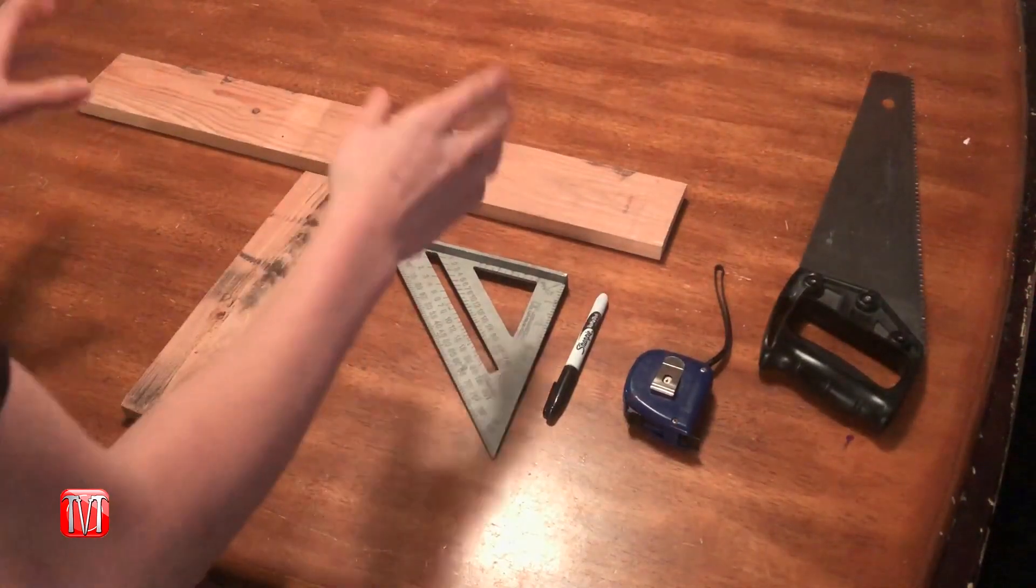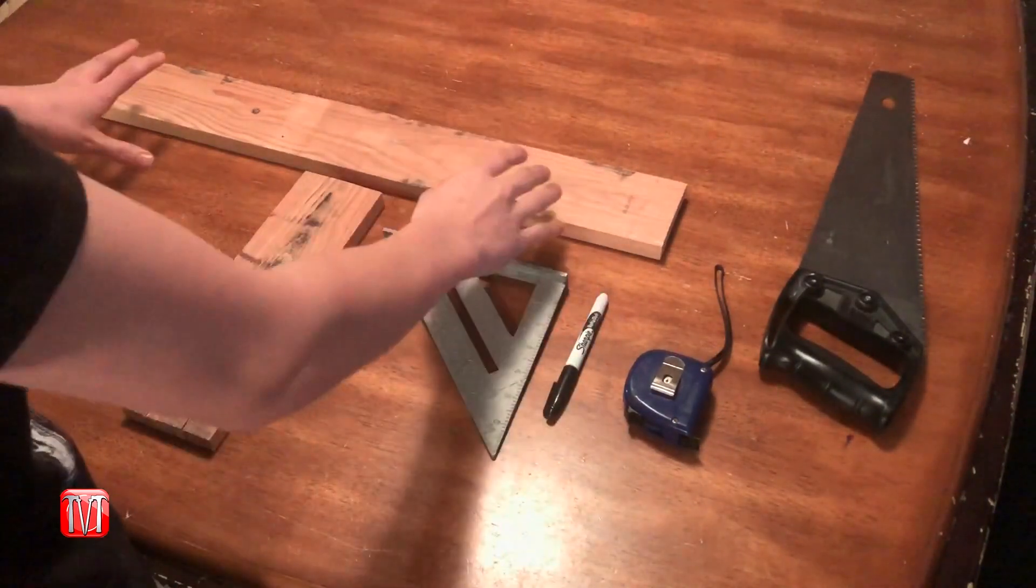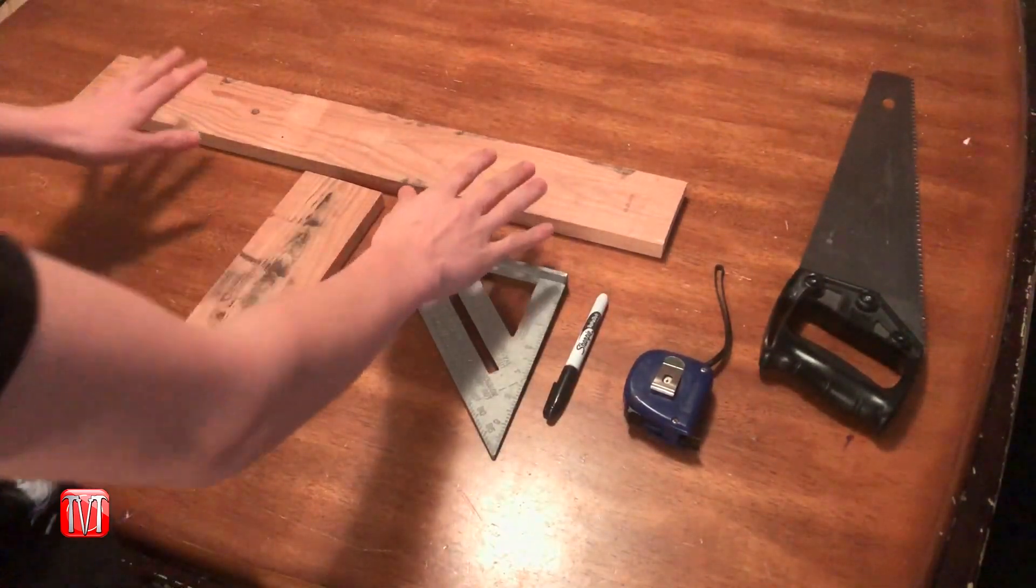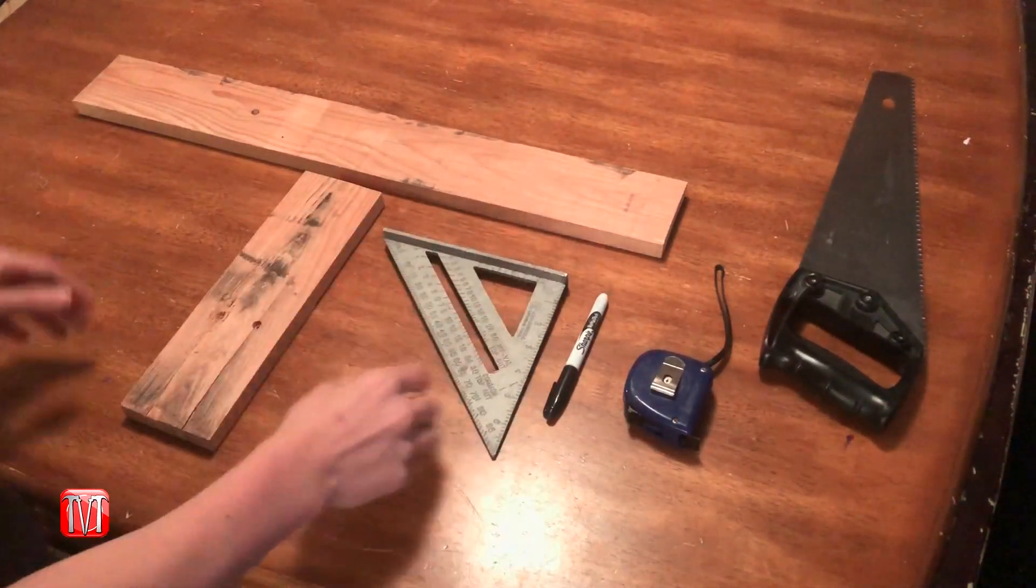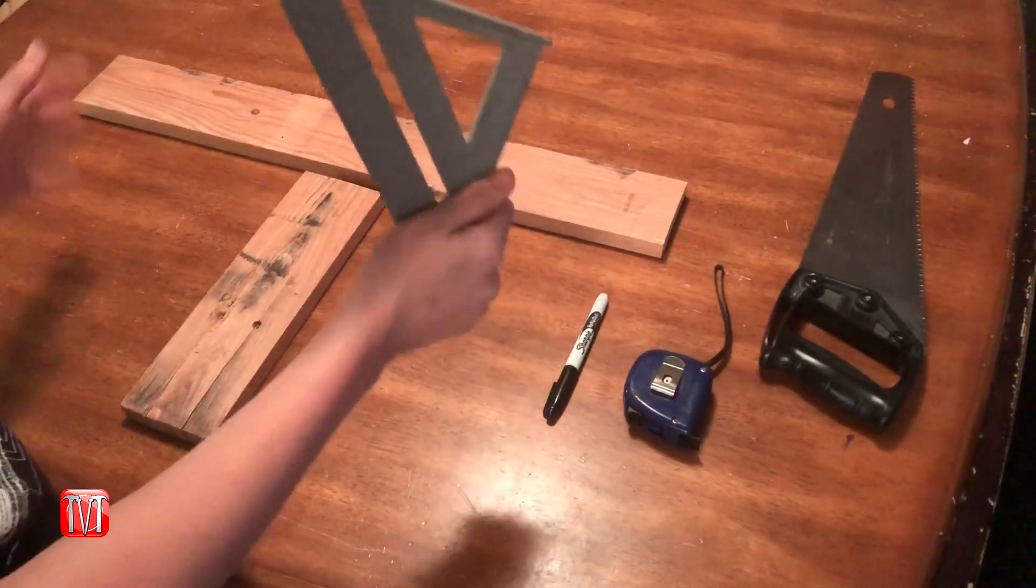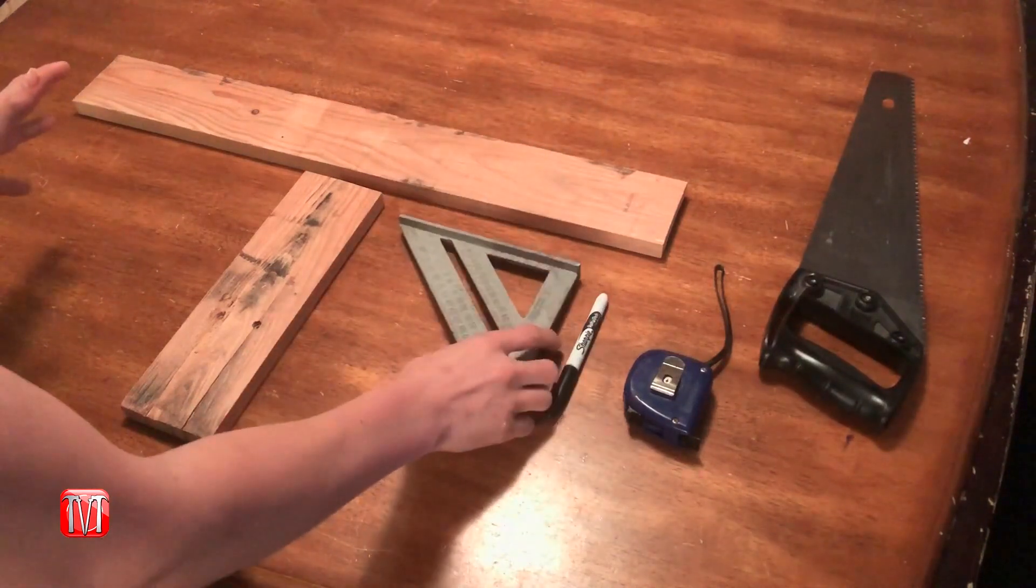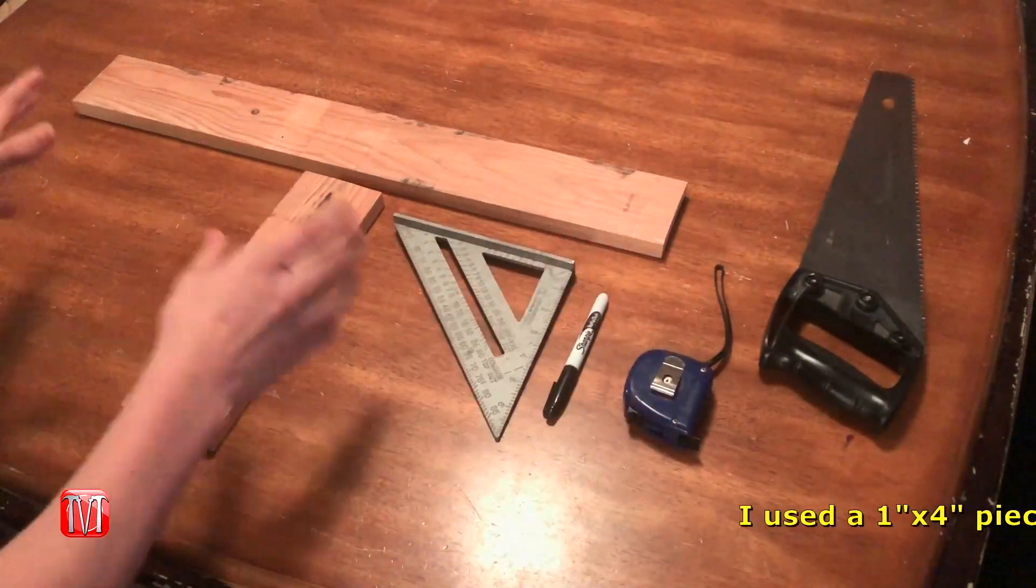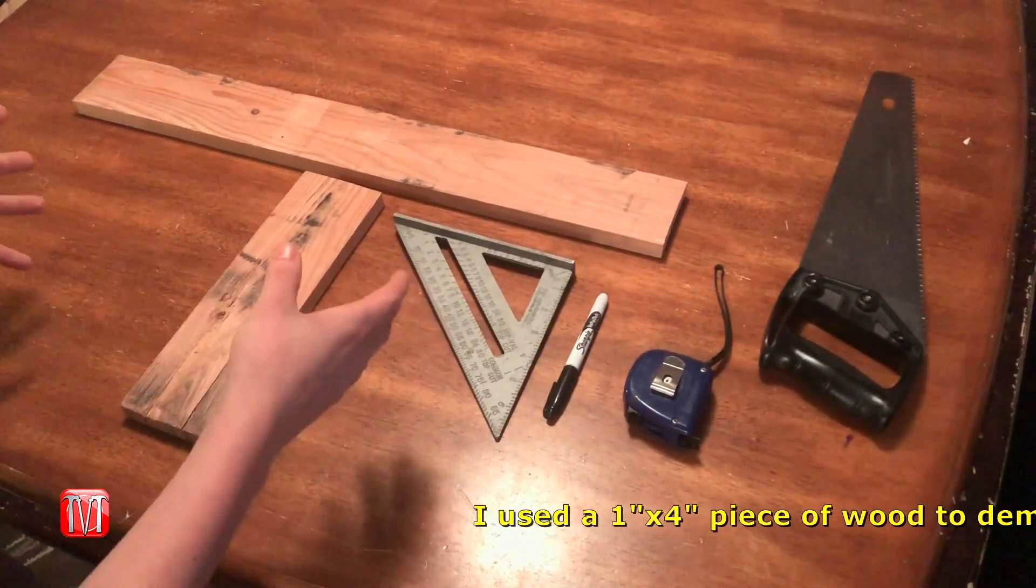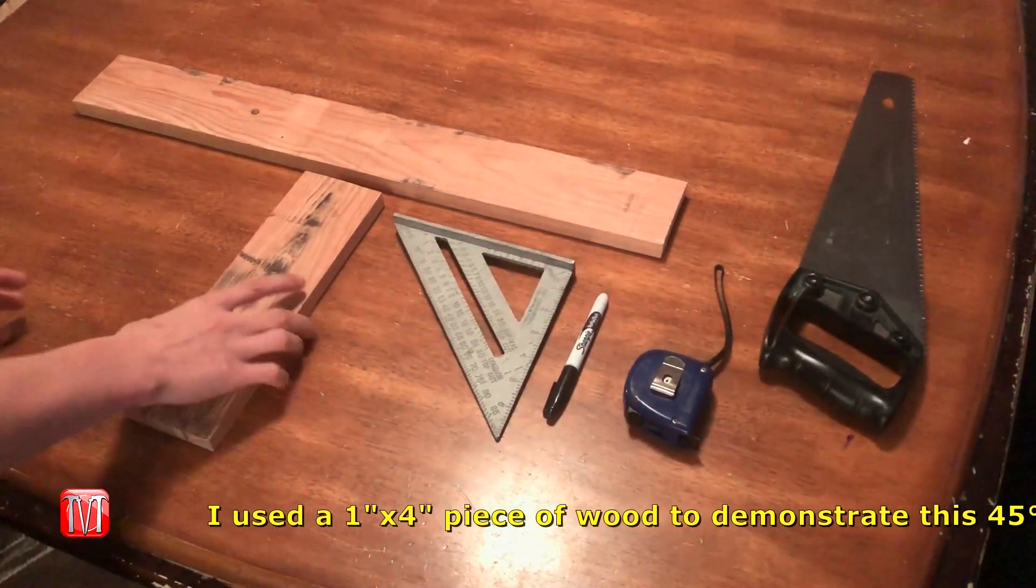When it comes to cutting a 45 degree angle on a straight piece of material, whether it be wood, plastic, steel, or aluminum, there are several different methods you can use. For instance, you can use a square or a protractor to draw the 45 degree angle. But let's say you don't have a square or a protractor and you don't want to end up eyeballing the 45 degree angle.